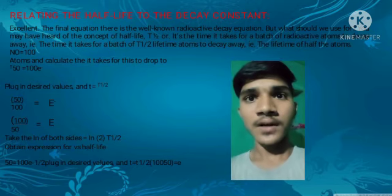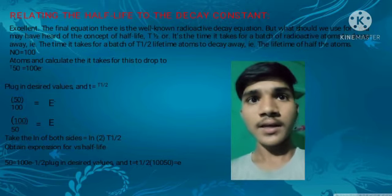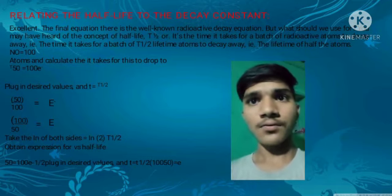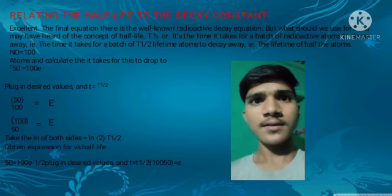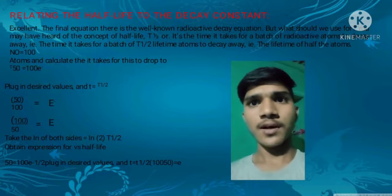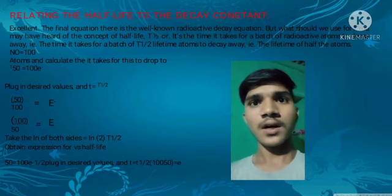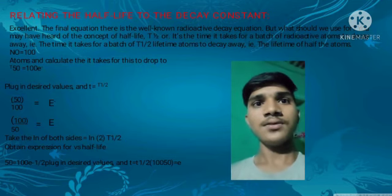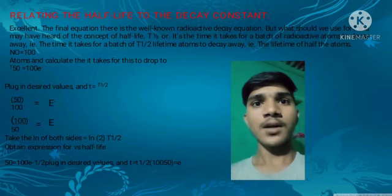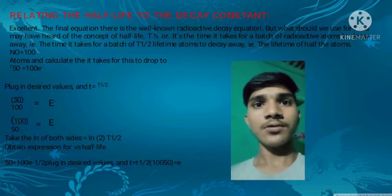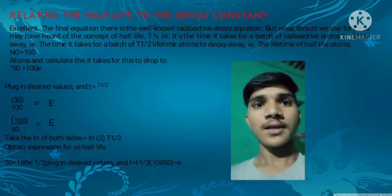Relating the half-life to the decay constant: The final equation here is the well-known radioactive decay equation. You may have heard of the concept of half-life T₁/₂ — the time it takes for a batch of radioactive atoms to decay to half. Let N₀ equal the initial number of atoms and calculate how long it takes for this to drop to half. Plug in the desired values with T = T₁/₂, and the result follows below.